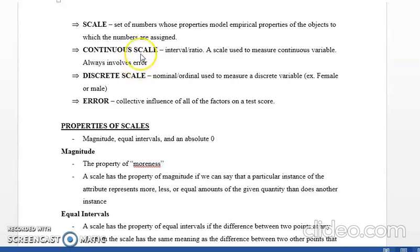Continuous variables can have infinite values. Depression, intelligence, anxiety - these values can be different. Each individual can be different. There will be a variety of values. For continuous variables, we use interval and ratio scales.